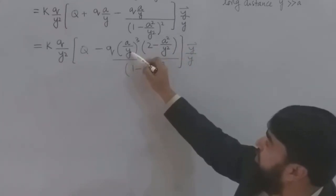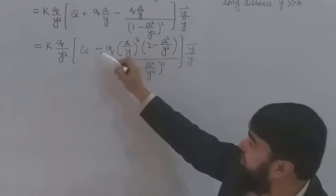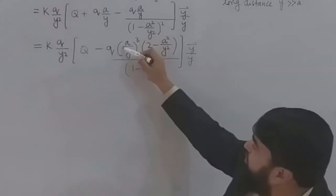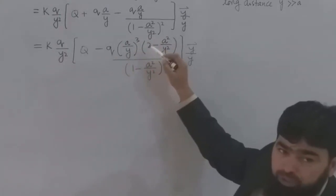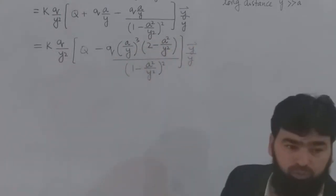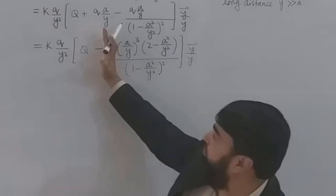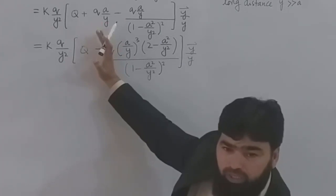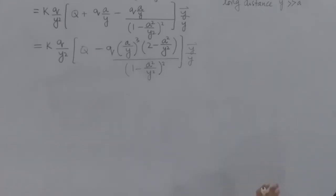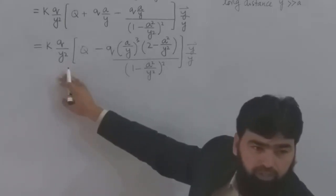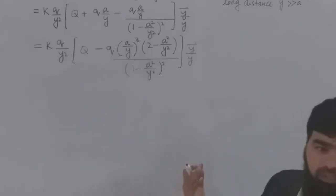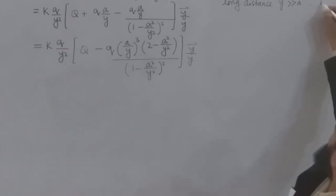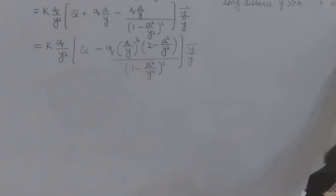The only difference which is occurring is in this portion. When y is very, very, very greater than a, then the denominator is going to one. So forget about the denominator. This term will also go to zero. So this is 2 minus this. All this term is going to zero, and we are having again the 1 over y squared variation. So this force is varying as 1 over y squared.